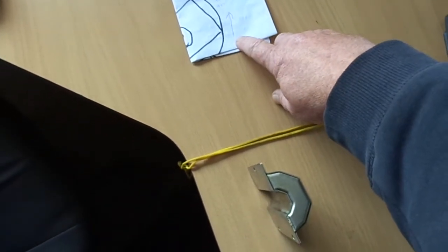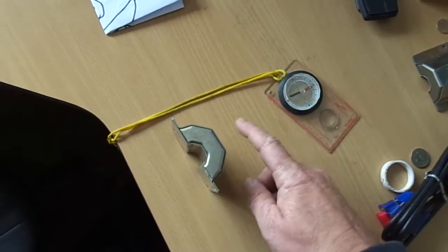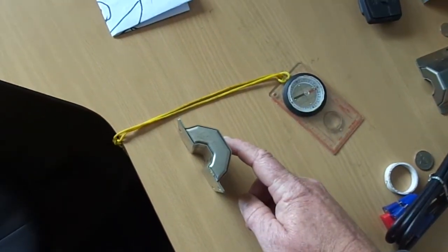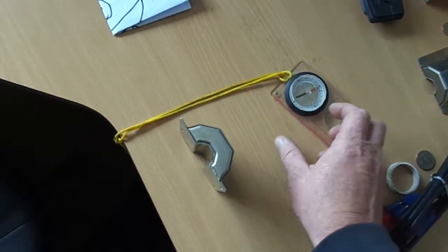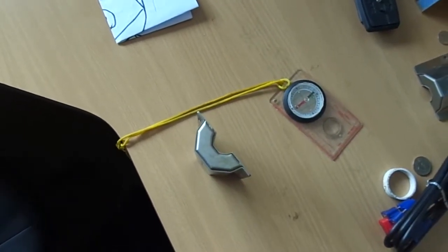You think north is over here, but I've just changed north over there because the south is attracting to the southern magnet, the south pole. If I spin this around to the north, it's going to attract to the north. Here we go.